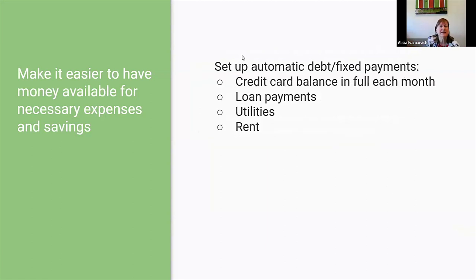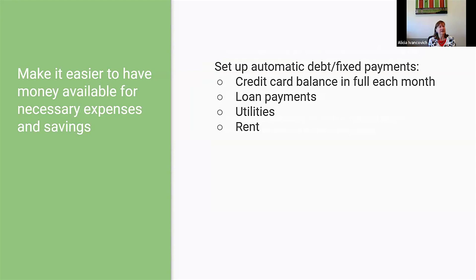The first type is setting up automatic payments for your debt payments, loan payments, and other fixed expenses — things like your credit card balance. I really recommend paying off the credit card balance in full every month with an automatic payment. I also recommend having loan payments set up to automatically pull from your bank account, and you can pay utilities with automatic payments so you don't get any late fees. You can often set up rent with an automatic payment too.